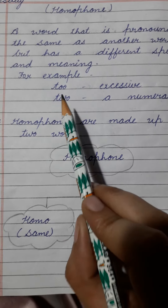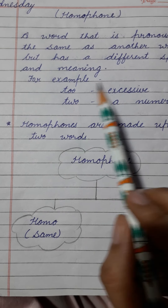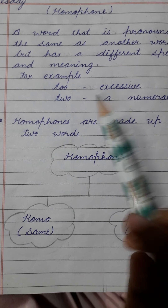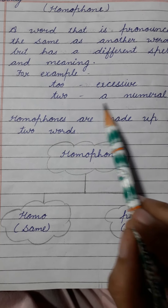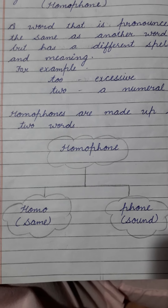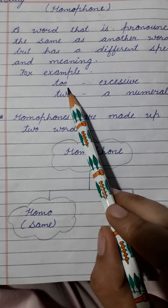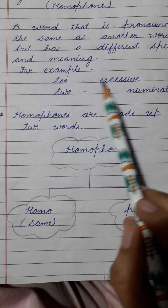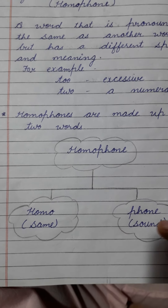For example, 'two' or 'too' — both are different words but both have different meaning and spelling. T-O-O means excessive, bohut zhaadha. T-W-O means the numeral number two, do. Donno shabda di pronunciation ta same hai par donno de meaning apte spelling donno hi different han.